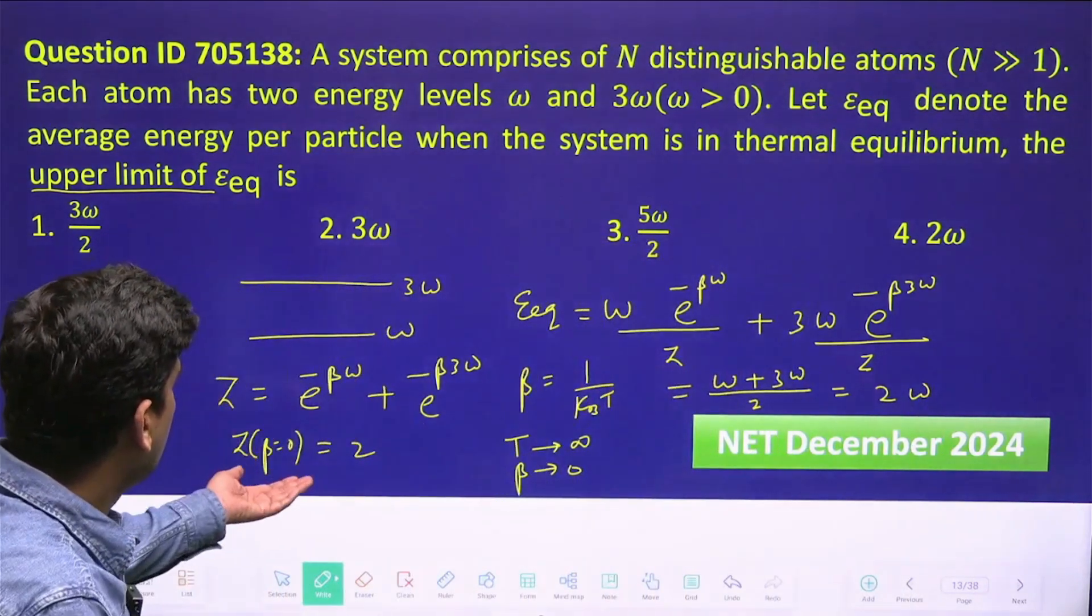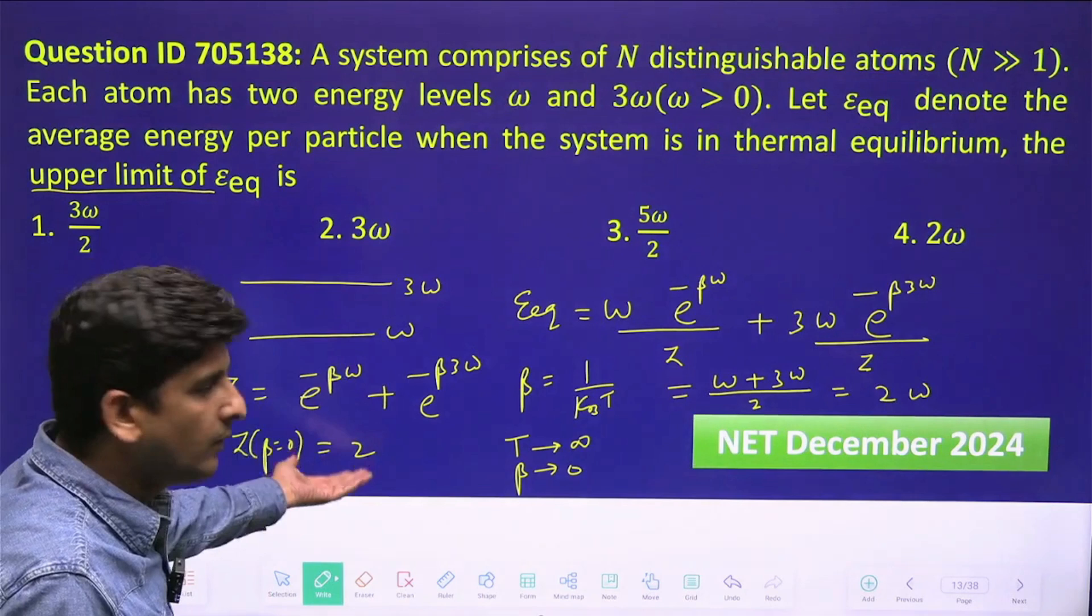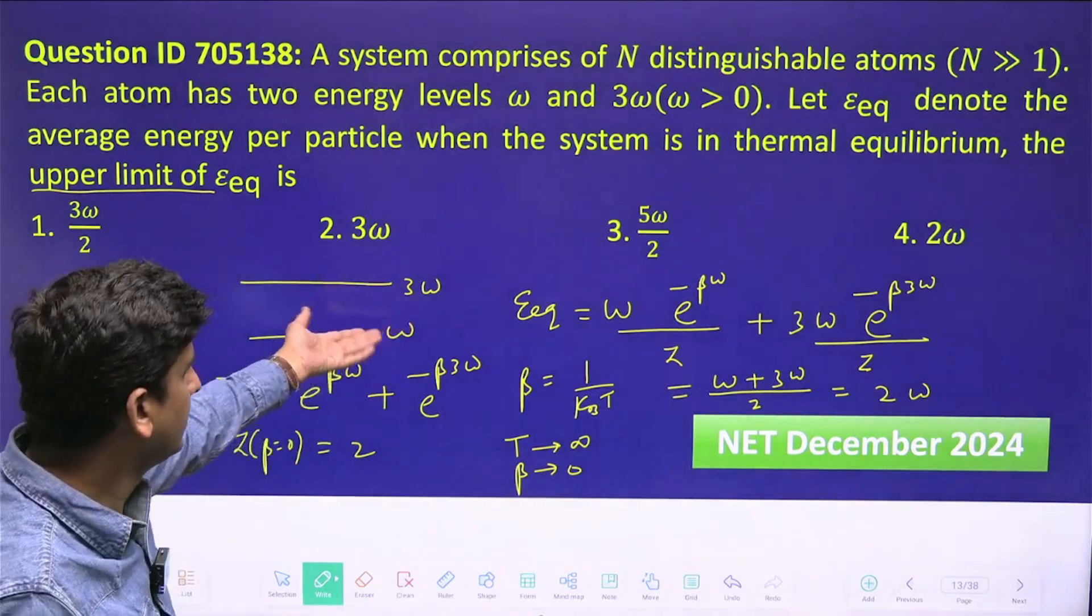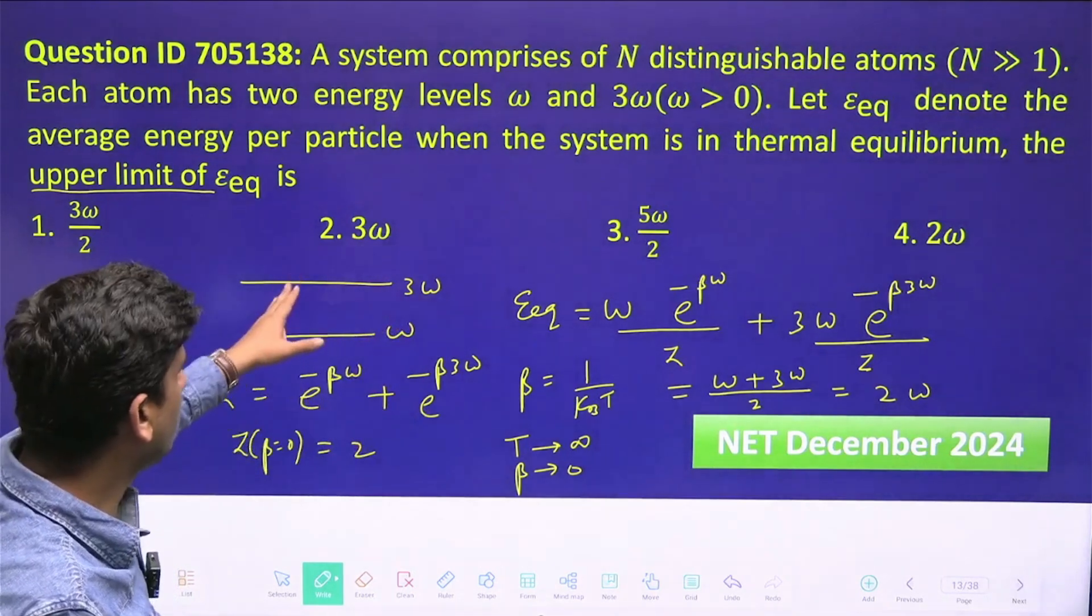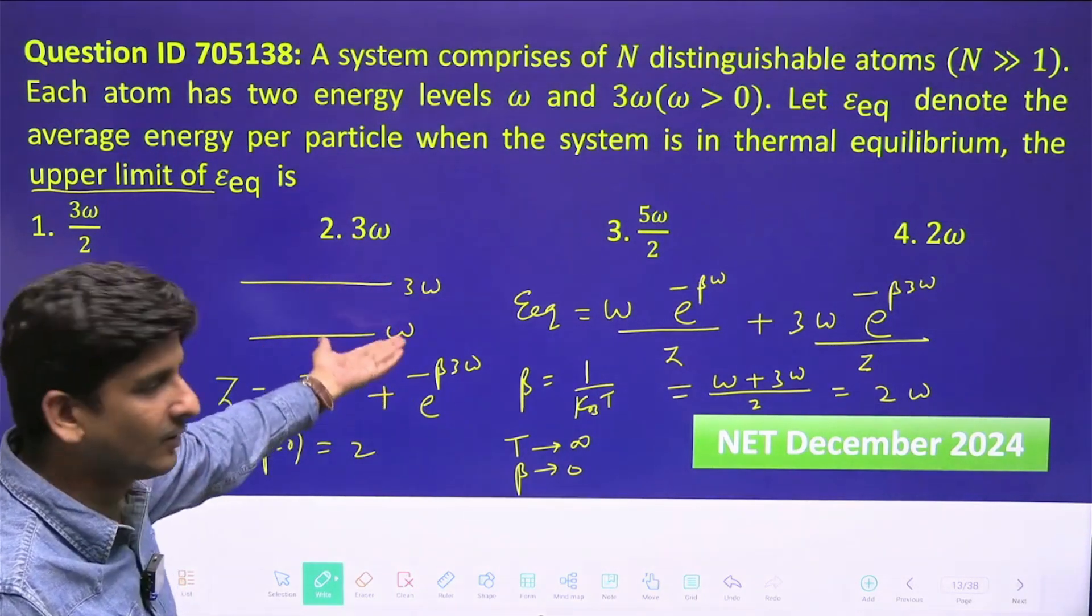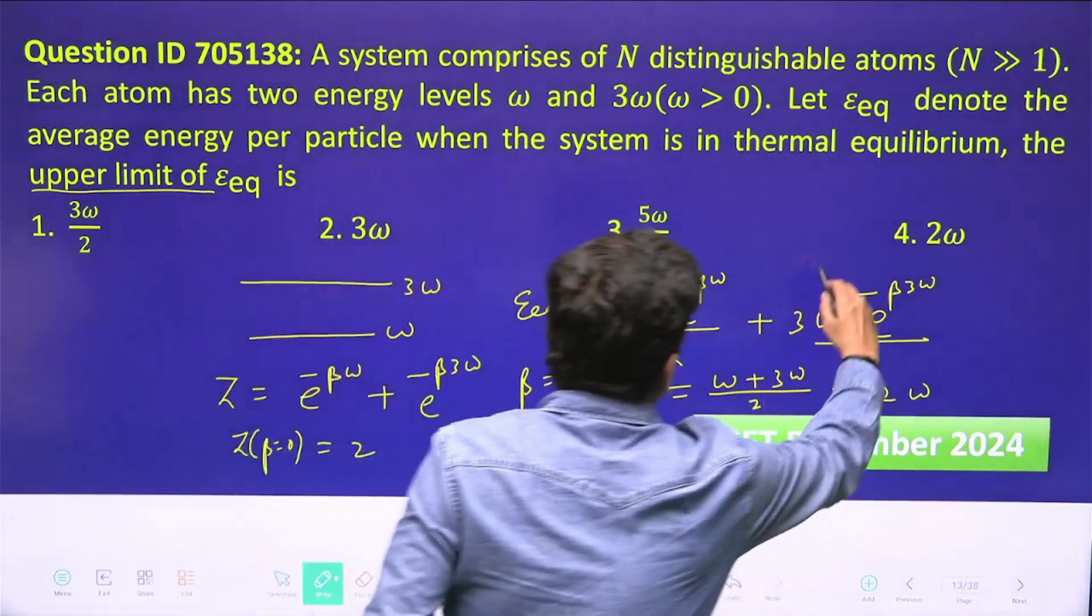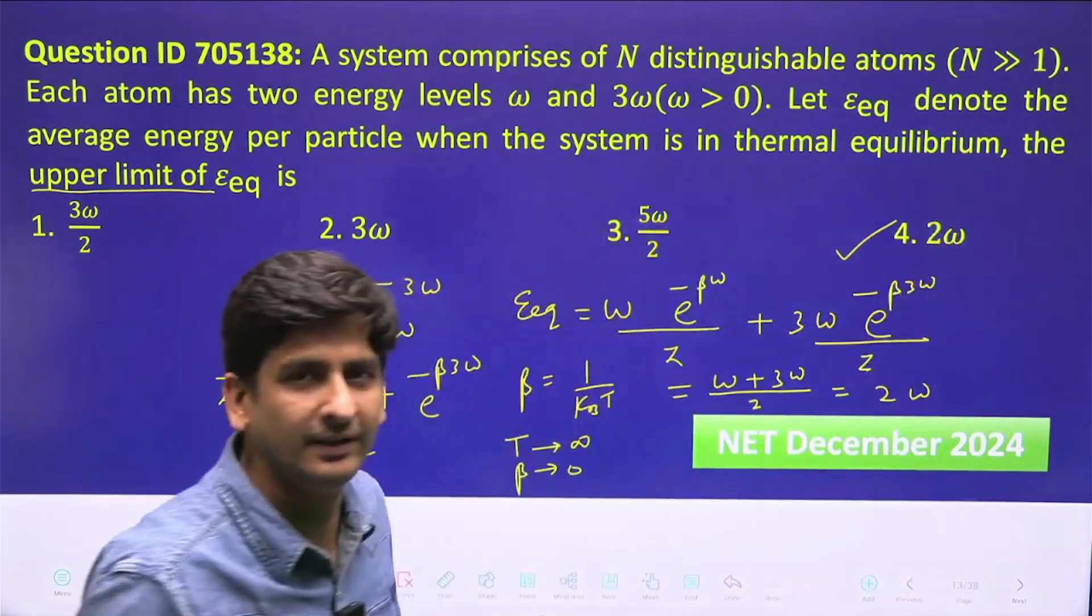If you think like this: if you increase the temperature, all of the particles can't go to three omega, so obviously energy cannot be three omega, and obviously it will be greater than omega. So two omega is the answer. This is the correct answer. Thank you.